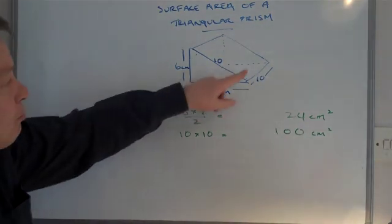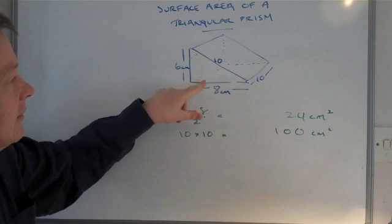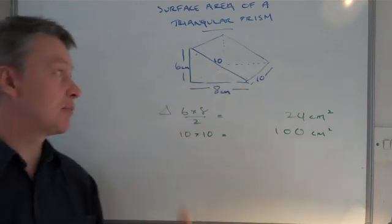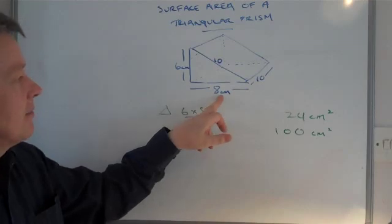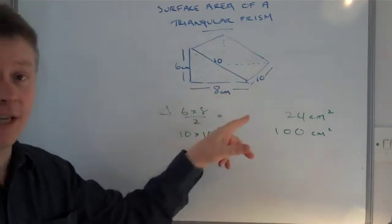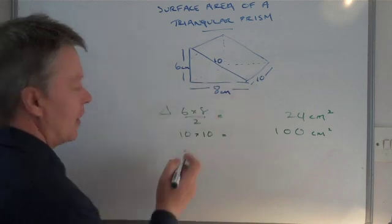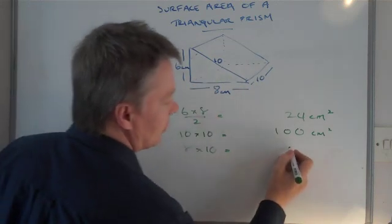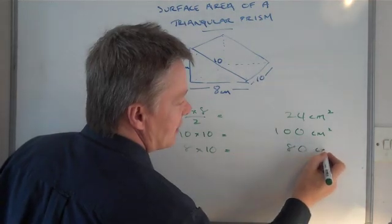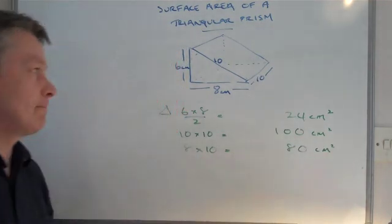Now I'm going to look at the bottom surface here. It's the surface that this triangular prism is actually resting on, which is 8 centimeters along and 10 centimeters deep. So this bottom surface is 8 times 10, which equals 80 centimeters squared.